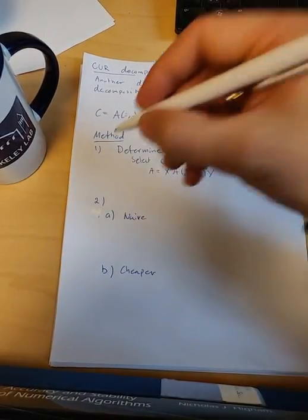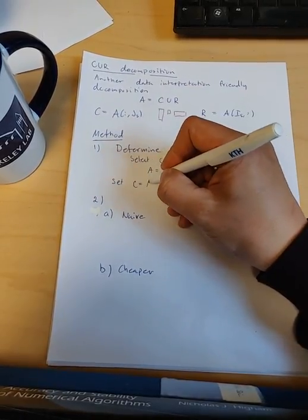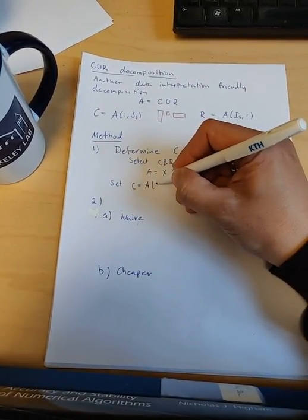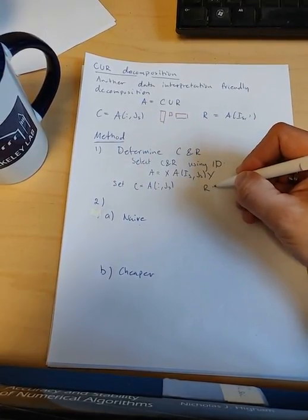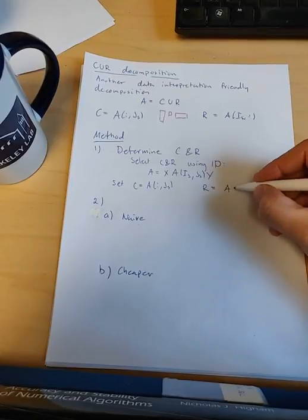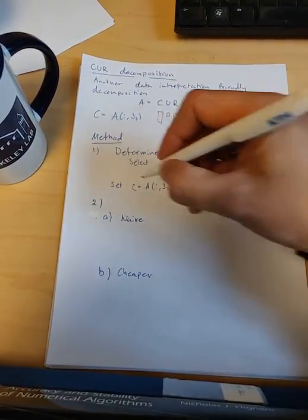And now the method is based on just setting the C matrix equal to A colon J, and R is equal to A, I S, colon. So we set C and R in this way.